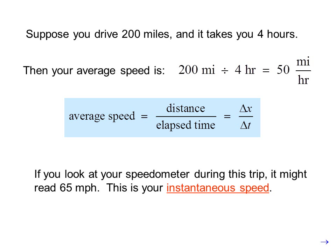If you look at your speedometer during this trip, it might read 65 miles per hour. This is your instantaneous speed. We know instantaneous speed differs from average speed. For this trip, for instance, you weren't going 50 miles an hour starting at your driveway or through the McDonald's drive-thru when you made a pit stop.